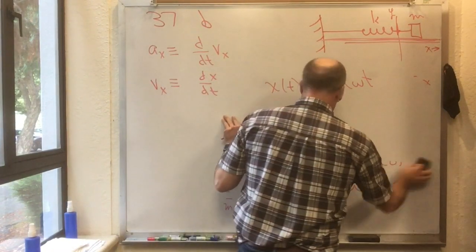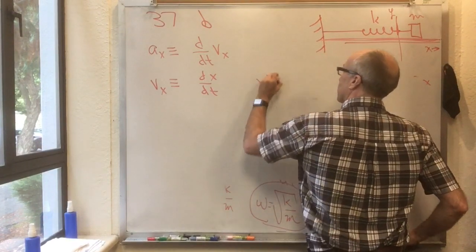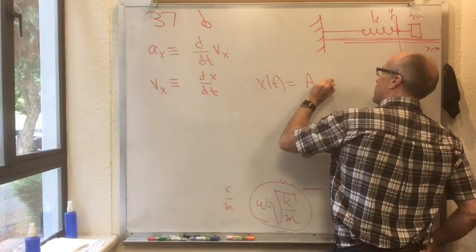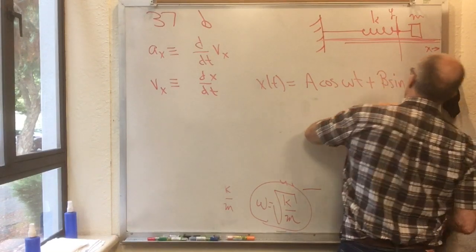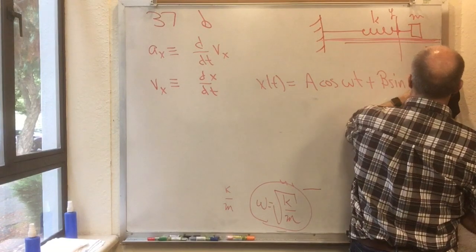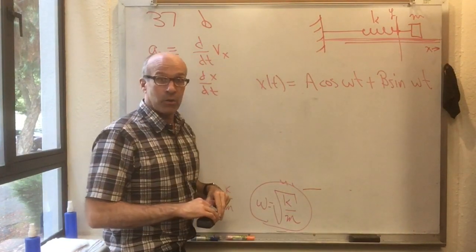And in fact, I'll tell you something more. x of t equals a cos omega t plus b sine omega t. In other words, absolutely any combination of cos omega t and sine omega t, that also works.